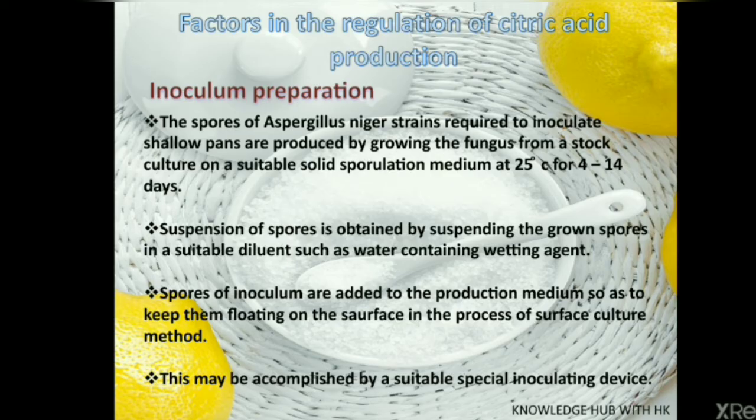Moving on to factors involved in the production of citric acid. First, the inoculum is prepared. Using the spores of Aspergillus niger strains required to inoculate shallow trays, the fungus is grown from a stock culture on a suitable solid sporulation medium at 25 degrees Celsius for 4 to 14 days. A suspension of spores is obtained by suspending the grown spores in a suitable solvent such as water containing wetting agents. Spores of inoculum are added to the production medium so as to keep them floating on the surface in the process of surface culture method.